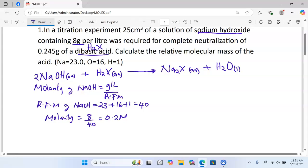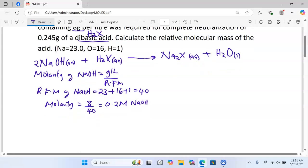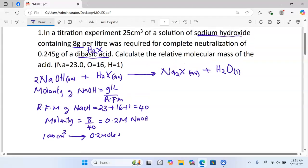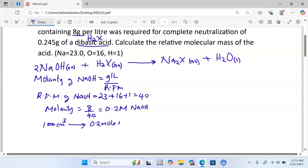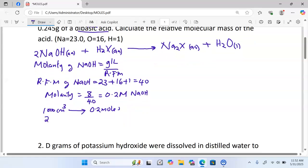0.2 molar simply represents the number of moles of sodium hydroxide in one liter, which is a thousand centimeter cubic. And therefore, we can say in 1,000 centimeter cubic, we have 0.2 moles. We need to calculate the number of moles which are contained in the volume that reacted with the dibasic acid. The volume of the base that reacted was 25 centimeter cubic,